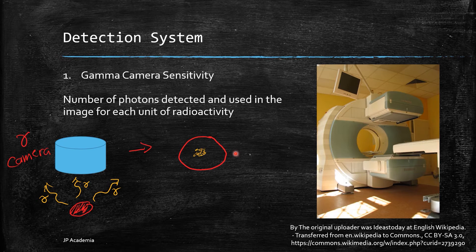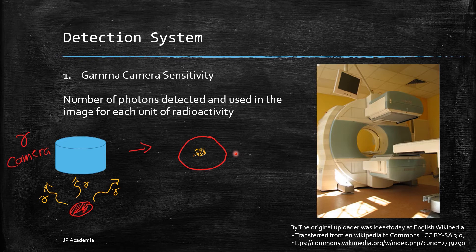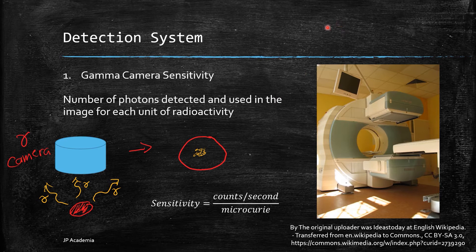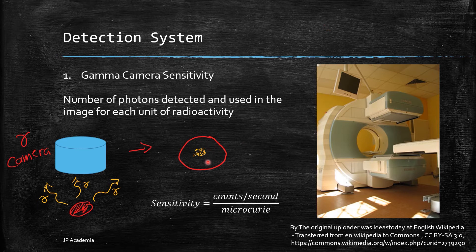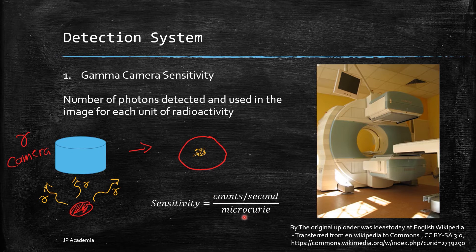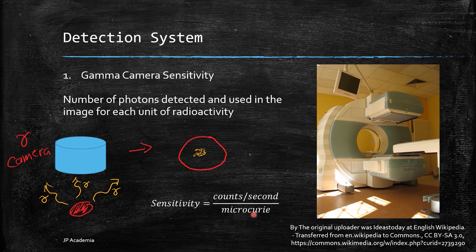However, small fraction of this photon emission are only utilized in the image formation. The sensitivity of a gamma camera is expressed as the number of photons detected and used in the image for each unit of radioactivity, or in terms of microcurie. Camera sensitivities generally range from 100 to 1000 cps or counts per second over microcurie.